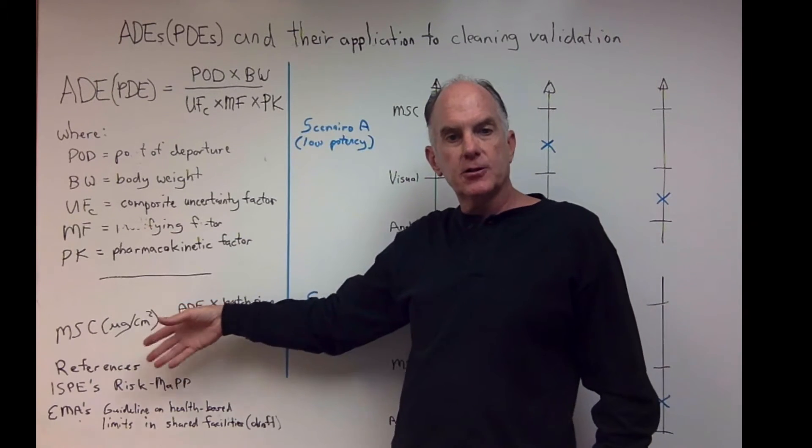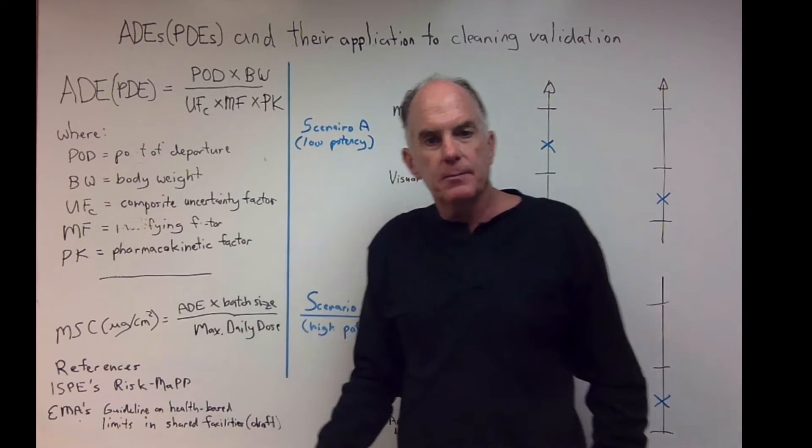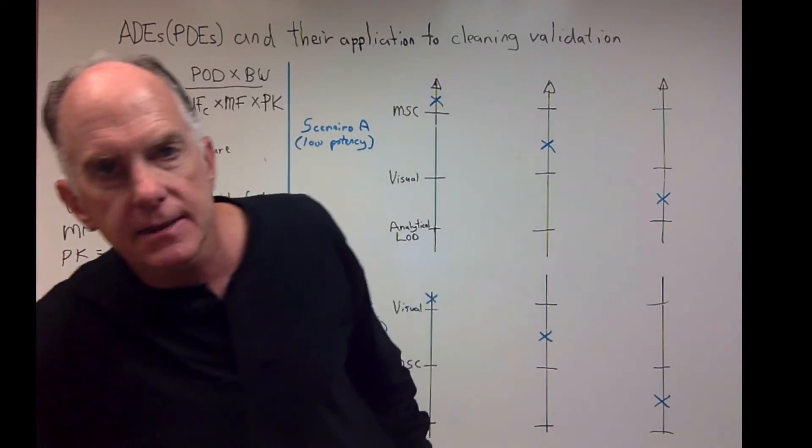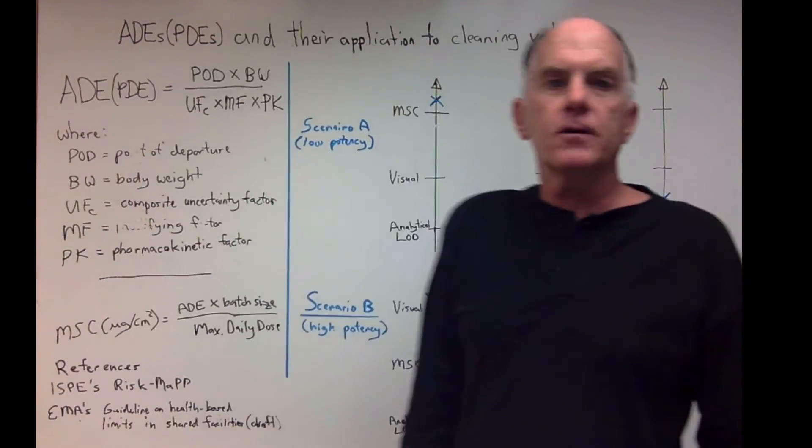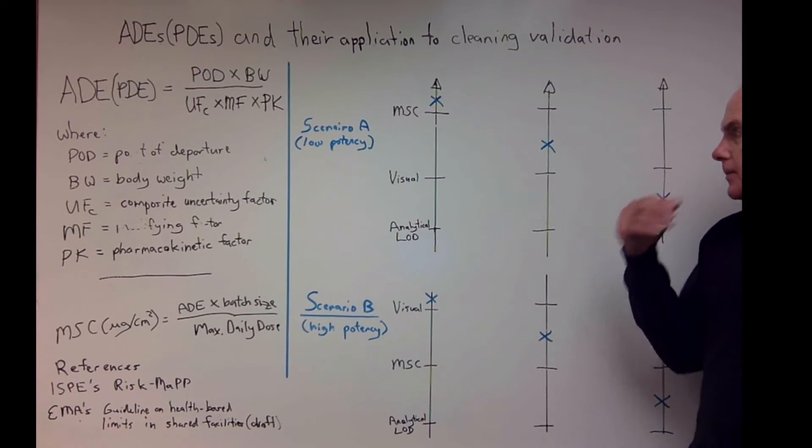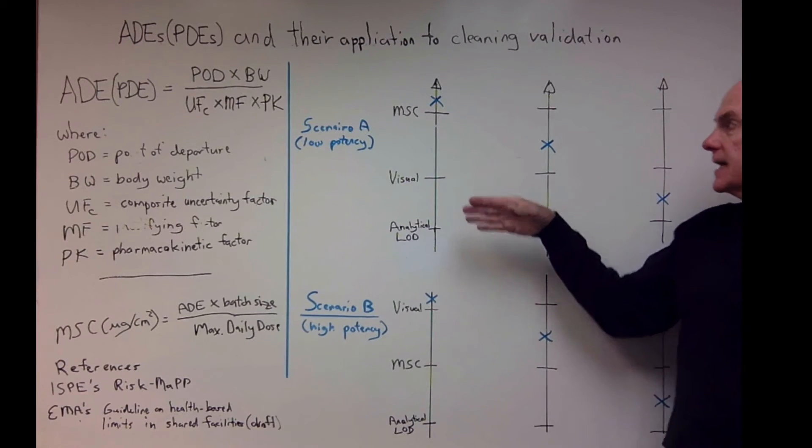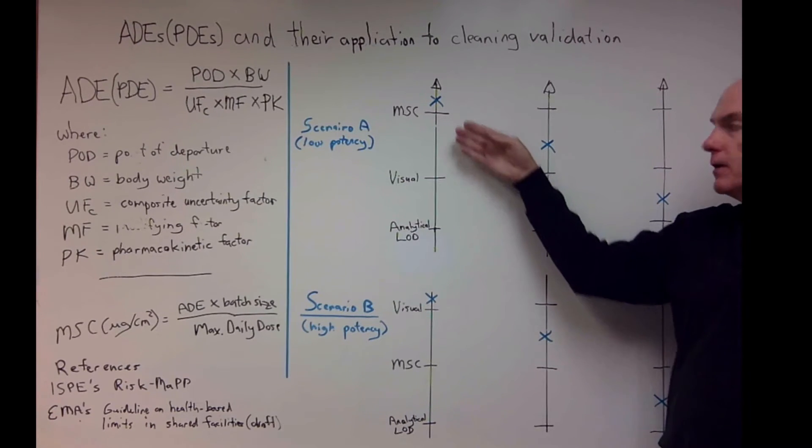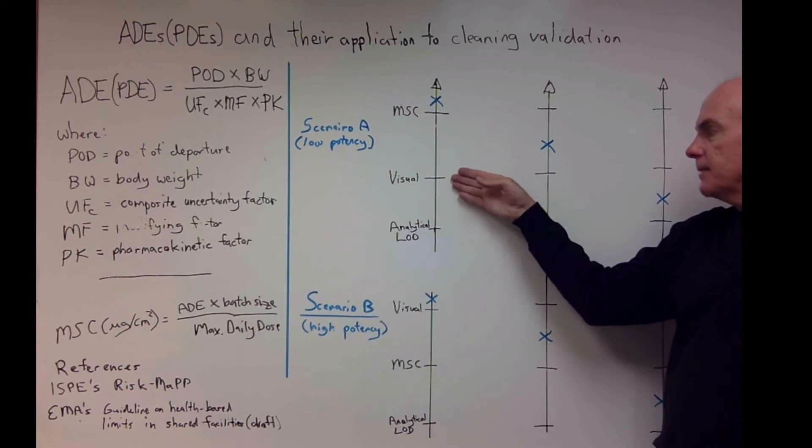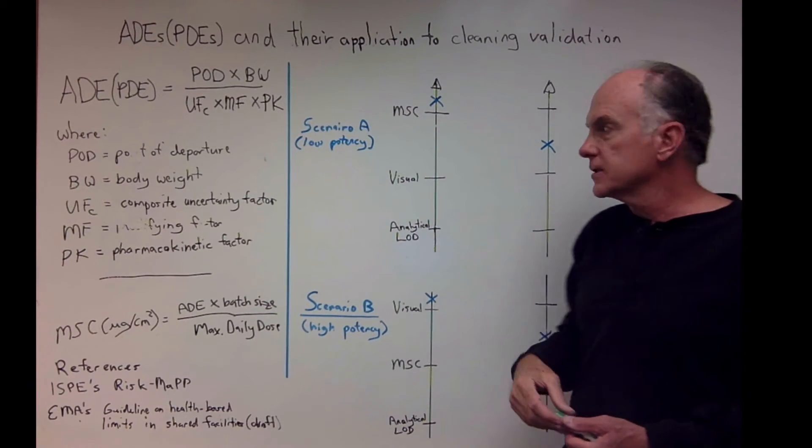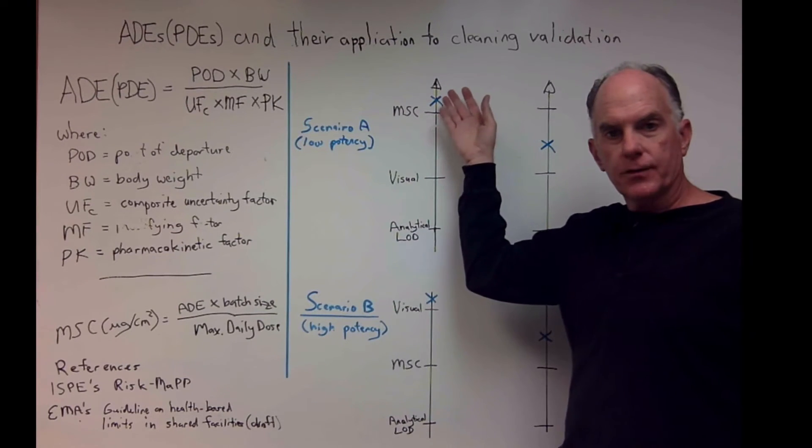Now let's talk about several different scenarios that could occur. Let's first look at scenario A for a low-potency product. There could be several cases. In the first case, your result from your sampling could be that your result is above your maximum safe carryover and above the visual limit, which in all cases is a bad thing. So you would have to do some further cleaning to make sure you bring that in line.